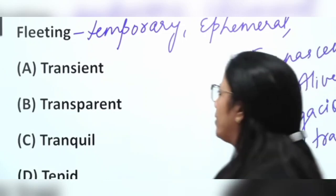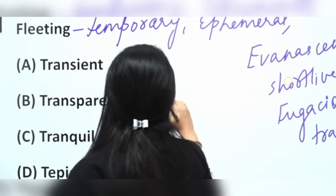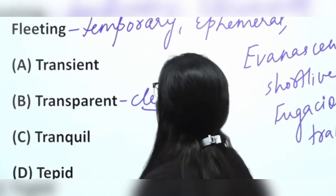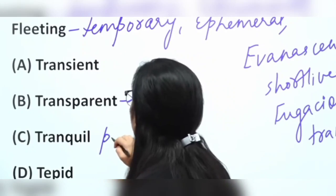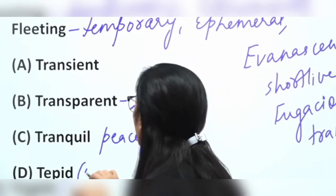Transparent means something which is very clear. Tranquil means peaceful, and tepid means warm.